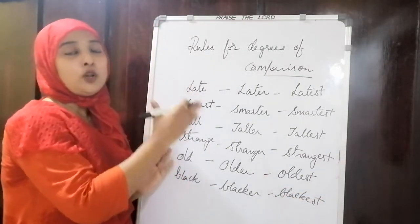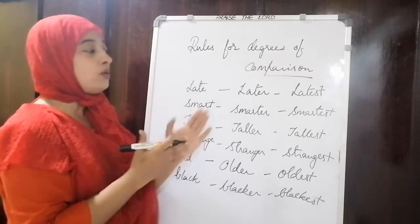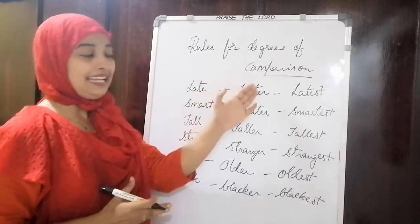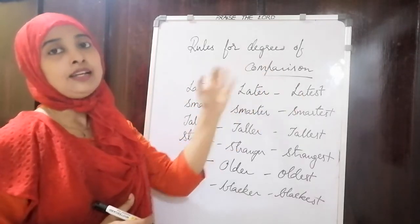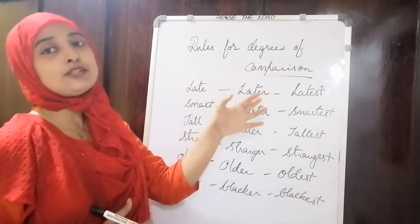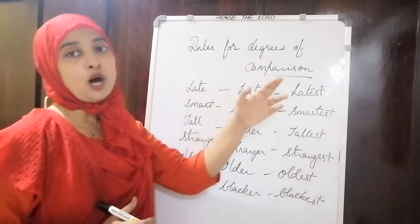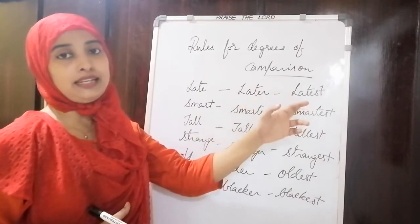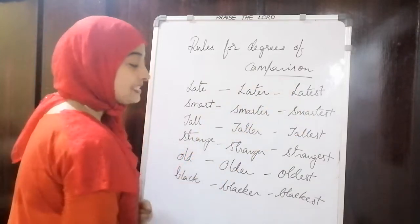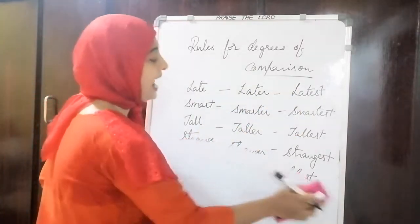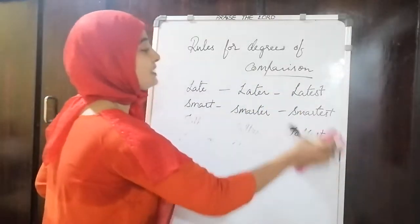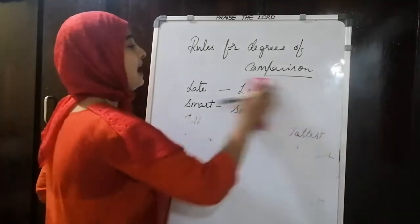When following the first rule, we add -ER or -EST to change a word into comparative or superlative degree. If it is ending with an E, you won't add ER — you simply add R.